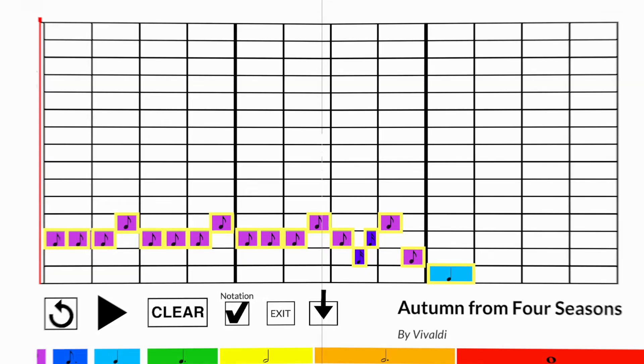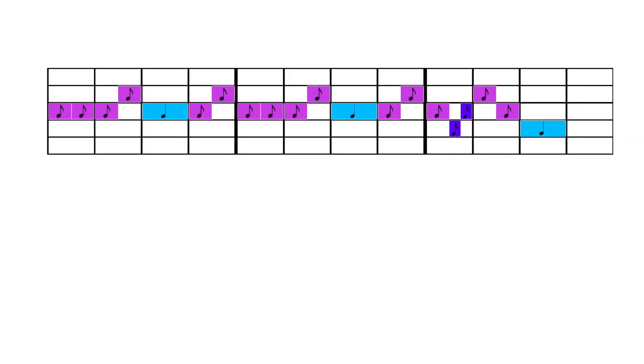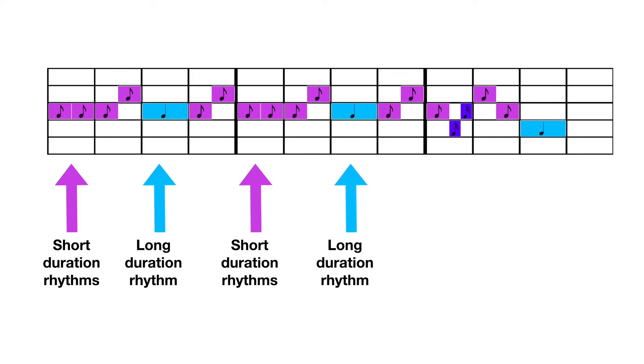Let's zoom into another section. In this part of Vivaldi's melody, we have the faster moving eighth notes coming to a brief rest on the quarter note, and then again. But check out this part of the melody in the green box. Do you see some new rhythms?